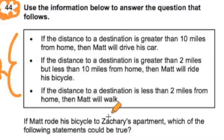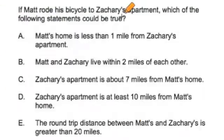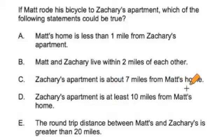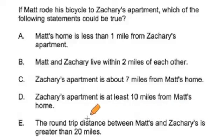If Matt rode his bike to Zachary's apartment, which of the following statements could be true? A: Matt's home is less than 1 mile from Zachary's apartment. B: Matt and Zachary live within 2 miles of each other. C: Zachary's apartment is about 7 miles from Matt's home. D: Zachary's apartment is at least 10 miles from Matt's home. Or E: the round trip distance between Matt's and Zachary's is greater than 20 miles.